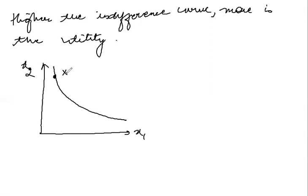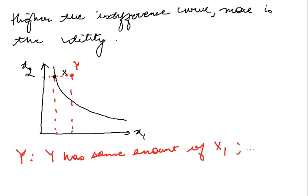Now, what I do correspondingly is that I go ahead and plot another point, and let us say that this other point is y. Point y is plotted such that it has the same amount of x2, but more of x1. So point y has same amount of x2, but more of x1.